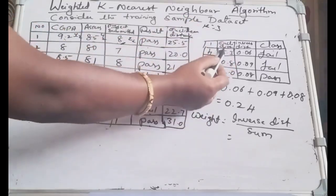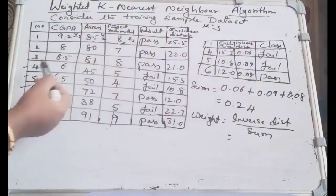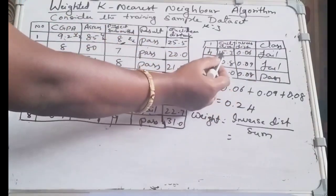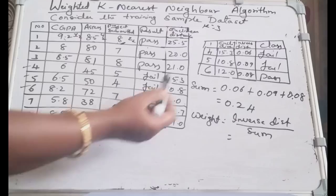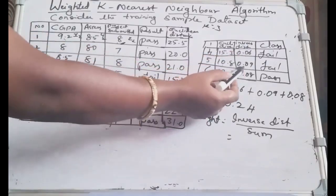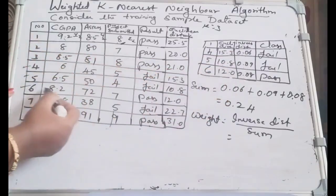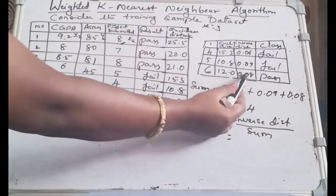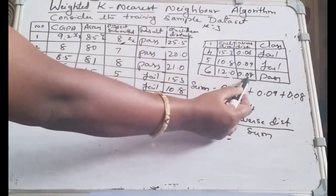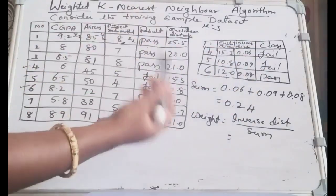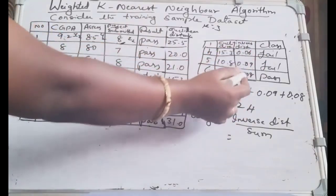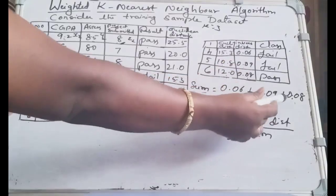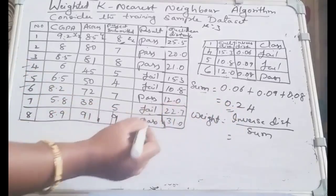Instances 4, 5, and 6 have classes fail, fail, and pass respectively. Now add a column for inverse distance. For instance 4 with distance 15.3, the inverse is 0.06. For instance 5 with distance 10.8, the inverse is 0.09. For instance 6 with distance 12.0, the inverse is 0.08. The sum of inverse distances is 0.06 + 0.09 + 0.08 = 0.24.